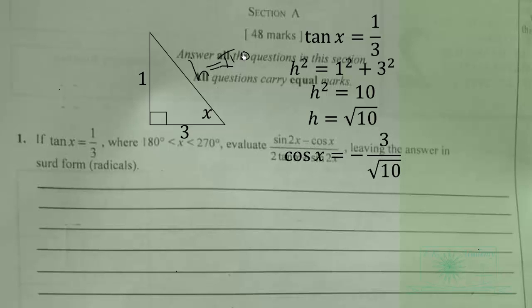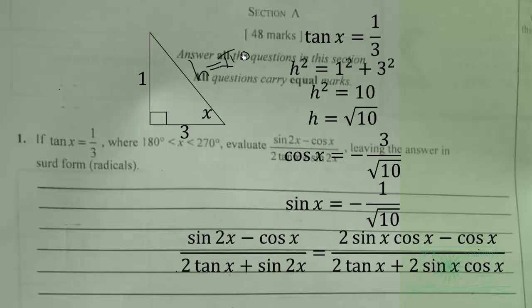So cos x will be adjacent over hypotenuse, which is negative 3 over root 10, and then sine x will be negative 1 over root 10. We do the substitution to the formula, but before that, sine 2x is equal to 2 sine x cos x from trigonometry double angles.